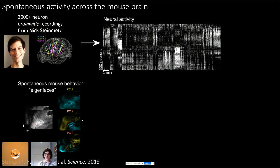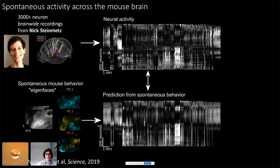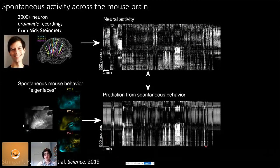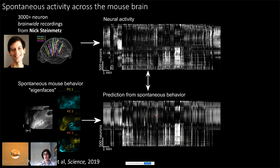Rastermap gives us a way to visualize behavioral predictions. For every neuron, we take the principal components of the motion energy of the mouse's face, use those to predict neural activity, and then display the predicted activity sorted using the same Rastermap ordering. This graphical representation lets us see which global structures and subgroups of neurons were well-predicted by behavior, and which subgroups were not — things that might be easier to identify graphically in this sorted format.